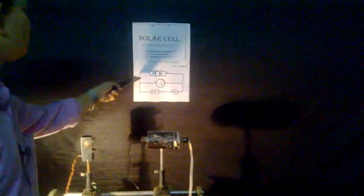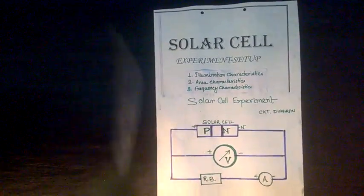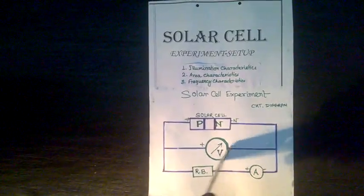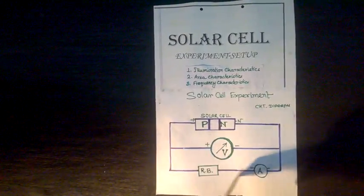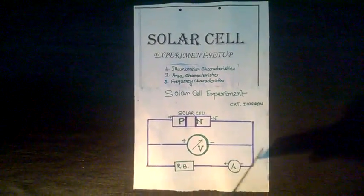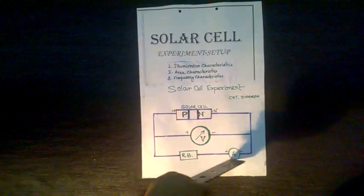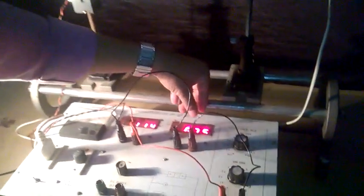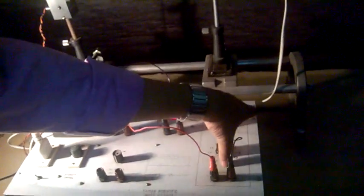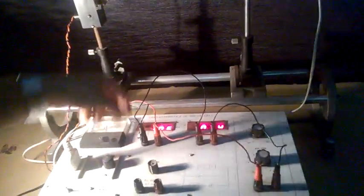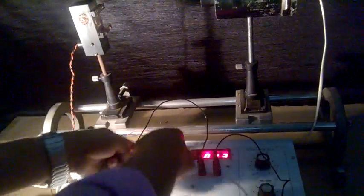This is our circuit to do the experiment. A solar cell is basically a P and N semiconductor separated by a junction. We have to measure voltage, so we connect a voltmeter across it, and we also measure current. We connect an ammeter with a resistance in series to protect it. In our apparatus there will be an inbuilt voltmeter, inbuilt ammeter, and inbuilt resistance.